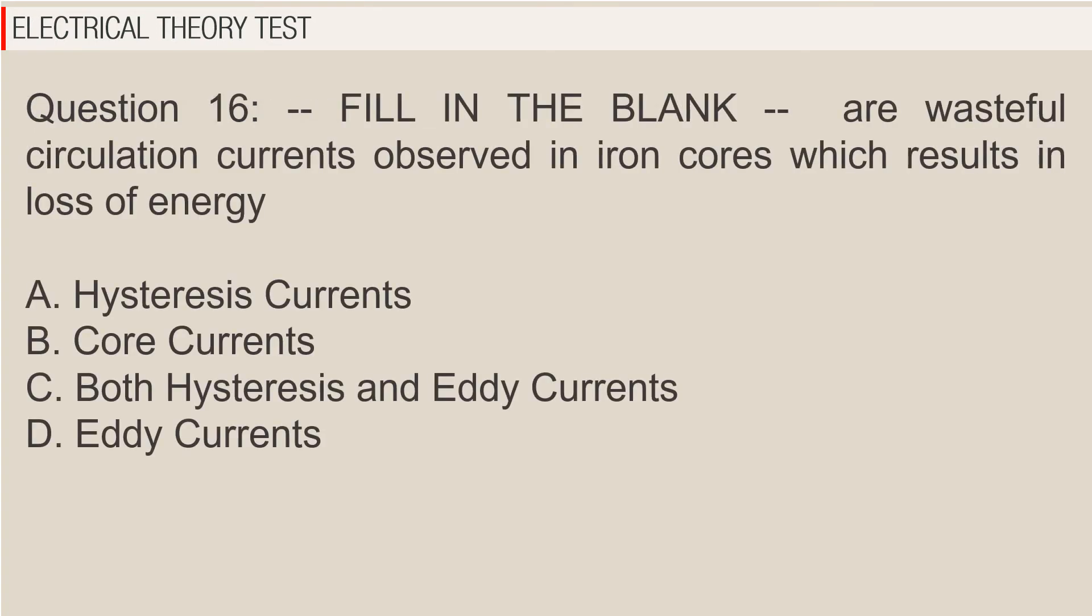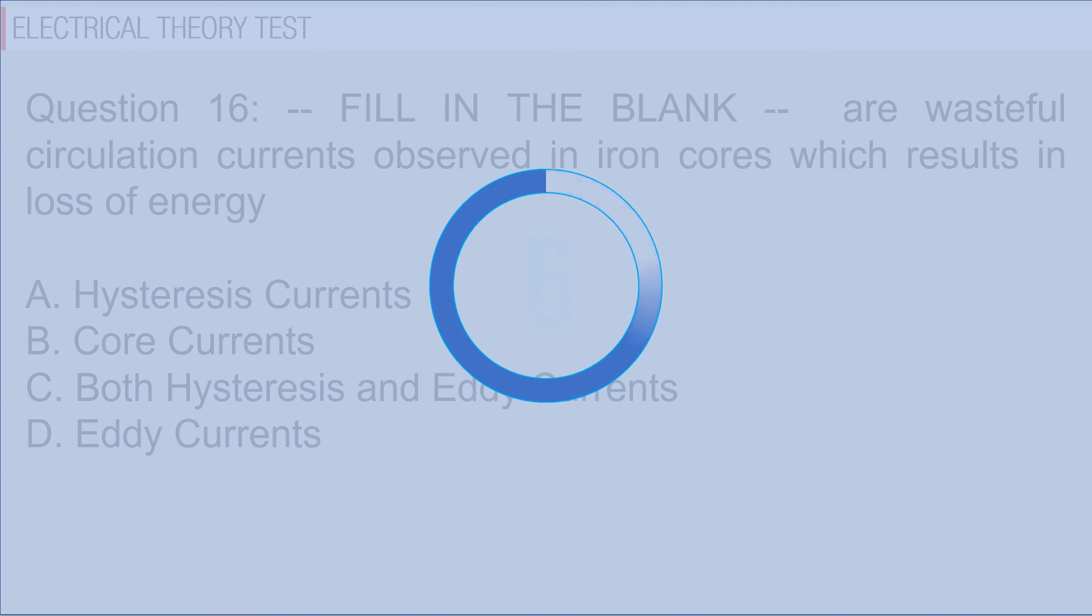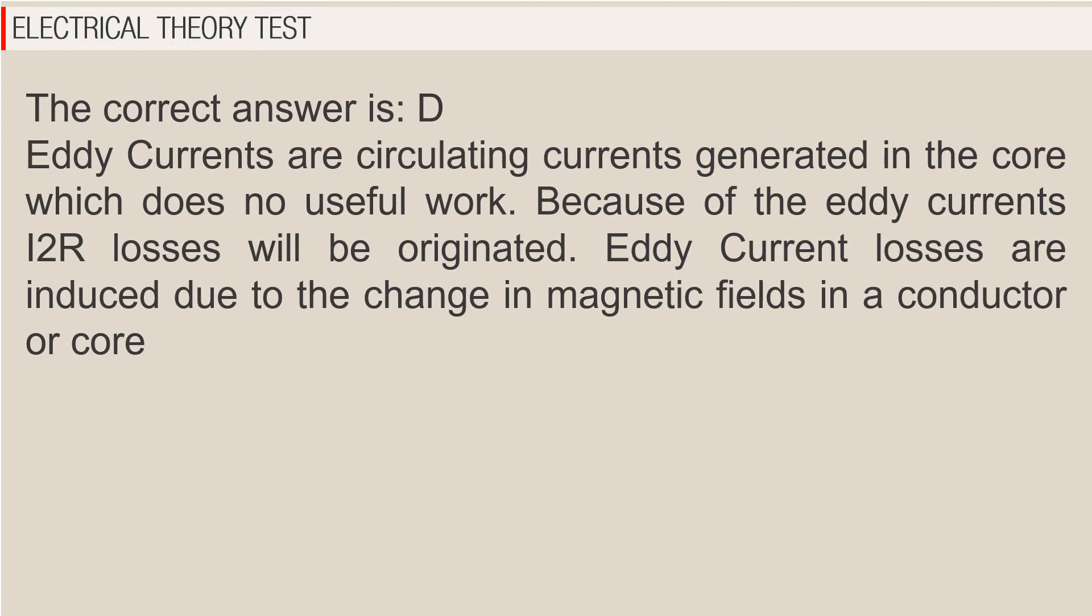Question 16: Fill in the blank. Blank are wasteful circulation currents observed in iron cores which results in loss of energy. A. Hysteresis currents, B. Core currents, C. Both hysteresis and eddy currents, D. Eddy currents. The correct answer is D. Eddy currents are circulating currents generated in the core which does no useful work. Because of the eddy currents, I squared R losses will be originated. Eddy current losses are induced due to the change in magnetic fields in a conductor or core.